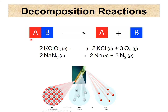Next is decomposition. This reaction has only one reactant — that's different from the previous types. The reactant is a compound, and it breaks apart into elements or other compounds. A great example is sodium azide: it decomposes very rapidly to produce a large amount of nitrogen gas, which is what fills your airbag so quickly in an accident.